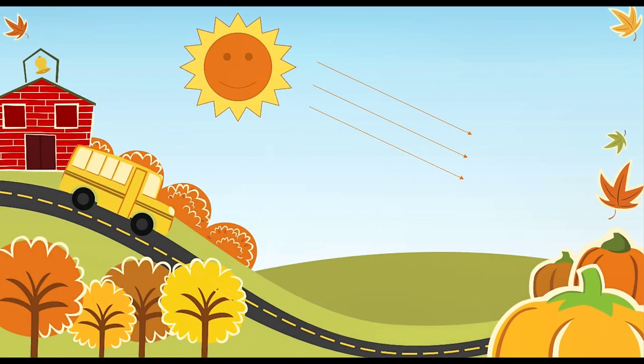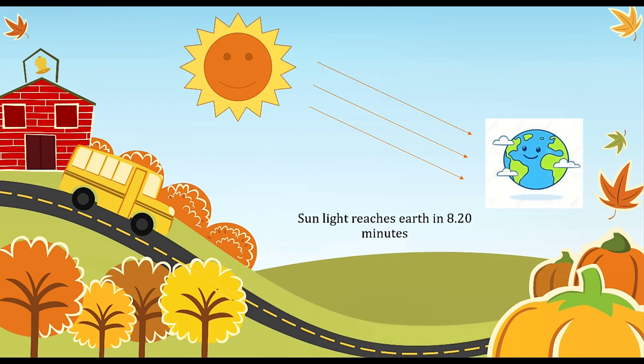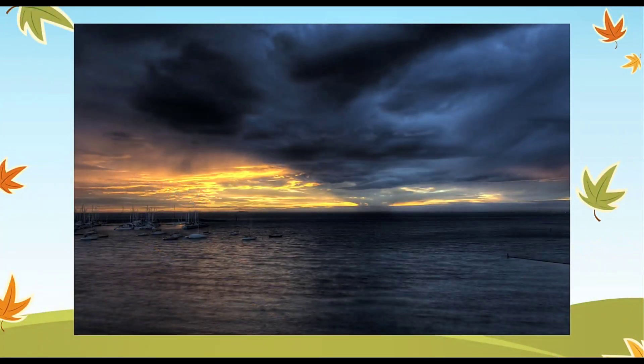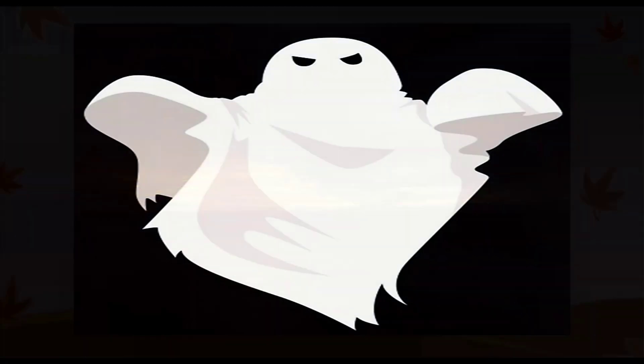On an average, it takes 8 minutes 20 seconds for sunlight to reach earth. So if the sun is gone at this very moment, we will get sunlight for the next 8 minutes, and after that it will be dark forever.